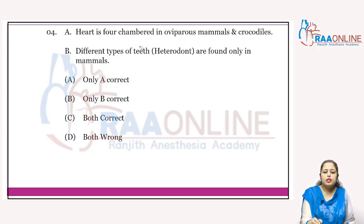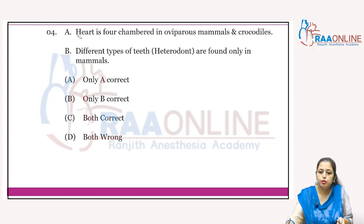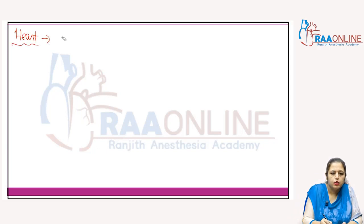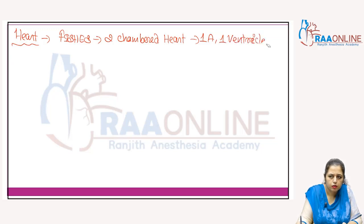The next question: the heart is four-chambered in oviparous mammals and crocodiles. When we talk about the evolutionary history of the heart — in fishes, the heart is two-chambered, with one atrium and one ventricle. The fish heart is a venous heart.